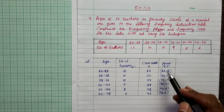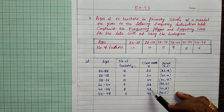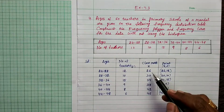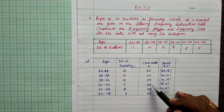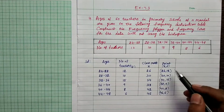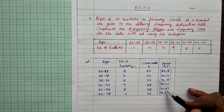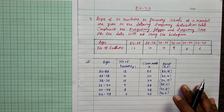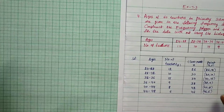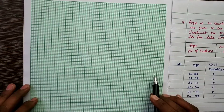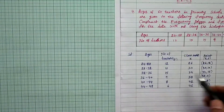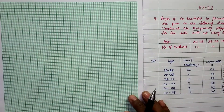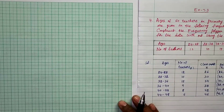The class marks are 26, 30, 34, 38 — with a difference of 4 between each. On the x-axis, take 1 cm as 4 units. The frequencies are 12, 10, 15, 9, 8, 6. On the y-axis, take 1 cm as 2 units.